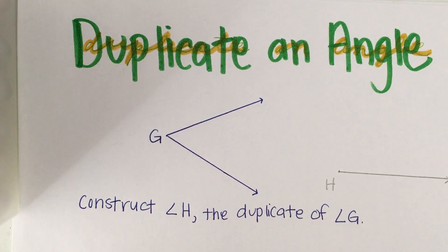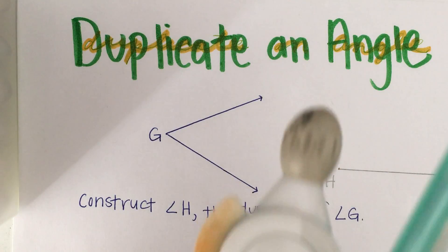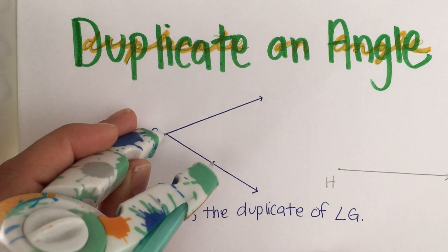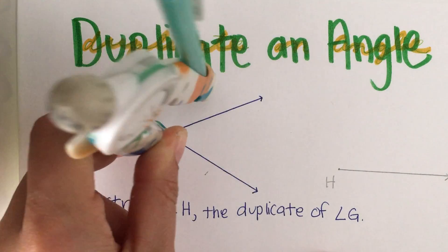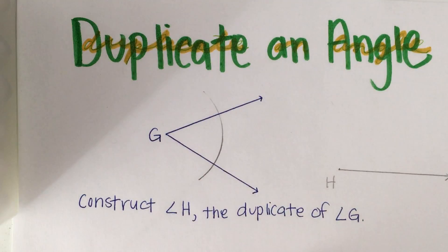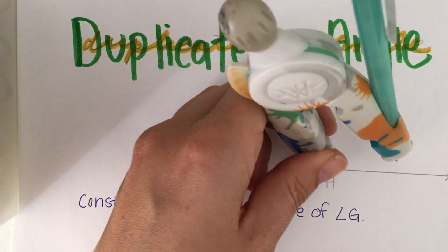The next step is to draw an arc across angle G. I'm going to put my compass point on G and draw an arc that intersects both sides of that angle. I'm going to keep the compass setting the same and go to point H.